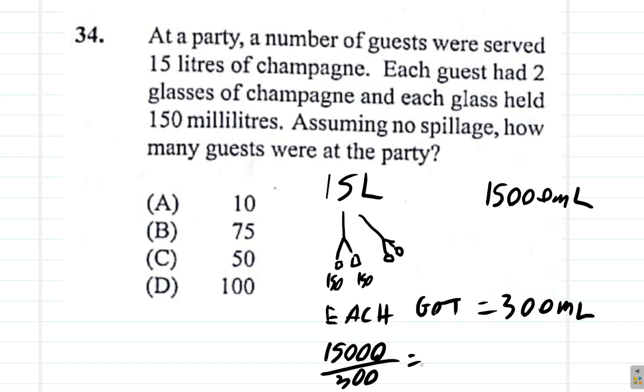This is the same as 150 times 100 divided by 3 times 100. 100 over 100 is one, so you have 150 divided by 3. Three into three is one, three into 15 is five.